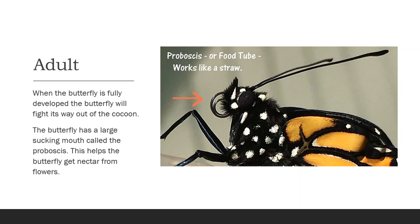As it says here, the butterfly has a large sucking mouth called the proboscis. You can see this right here — it looks exactly like that and it kind of spirals out.